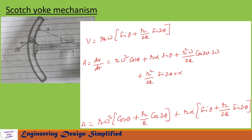To find the acceleration of the plunger, let us differentiate the velocity equation with respect to time. After differentiation and simplification, we get the acceleration of the plunger equal to rω²·cos(θ) + (r/R)·cos(2θ) + r·α·sin(θ) + (r/2R)·sin(2θ), where ω is the angular velocity of the crank and α is the angular acceleration of the crank. This is the equation to find the acceleration of the plunger.